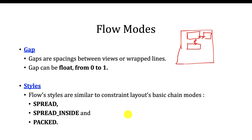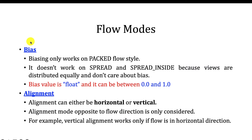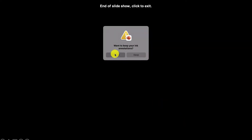The three styles available are spread, spread inside, and packed — we already discussed all these in the previous video. Next is bias mode — biasing only works on a packed flow style. Whenever you apply a packed style, then the bias will be applied, and it is a float value from 0.0 to 1.0. The alignment can be either horizontal or vertical.